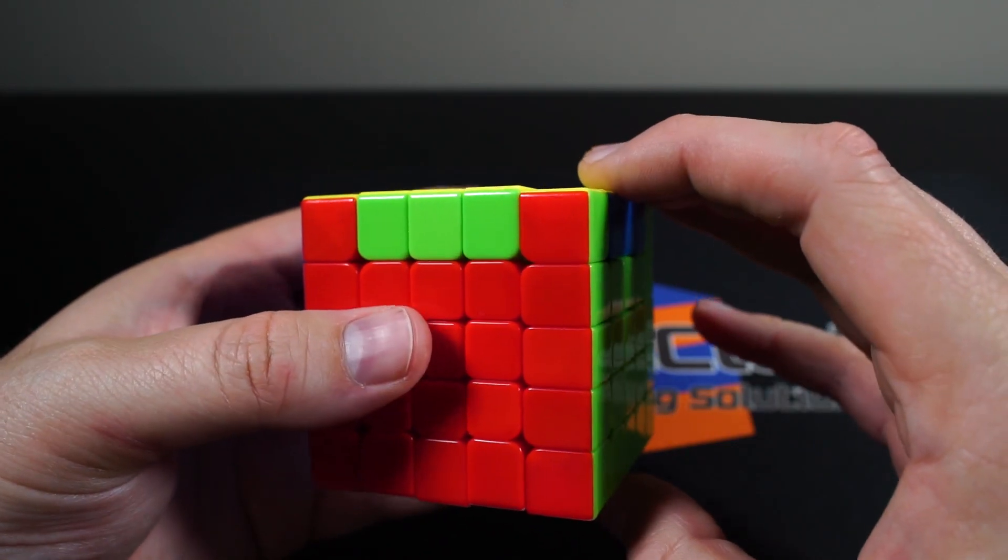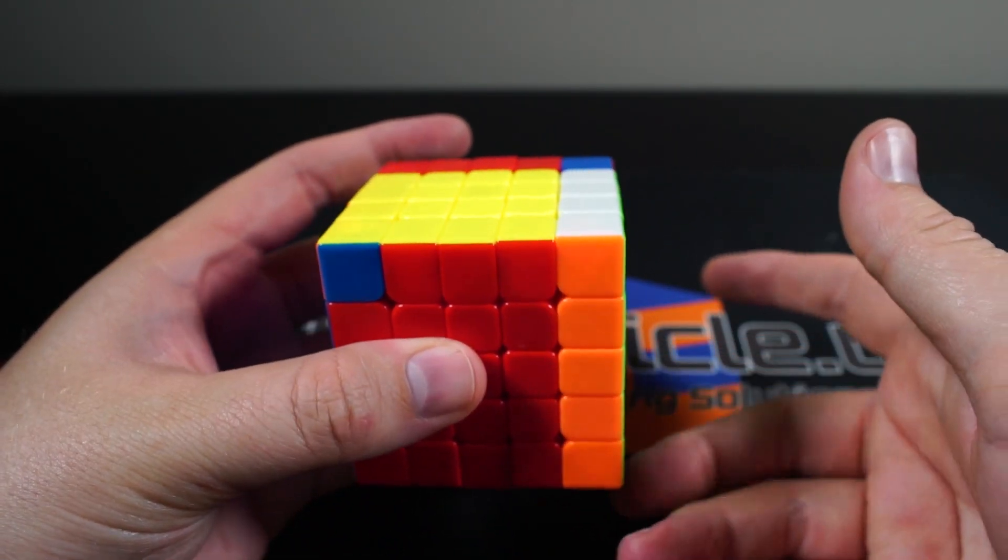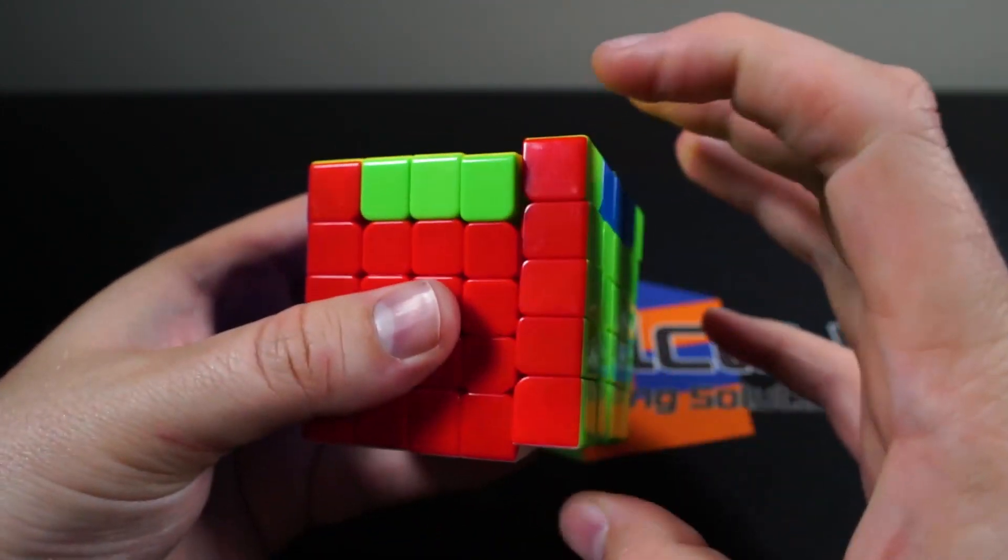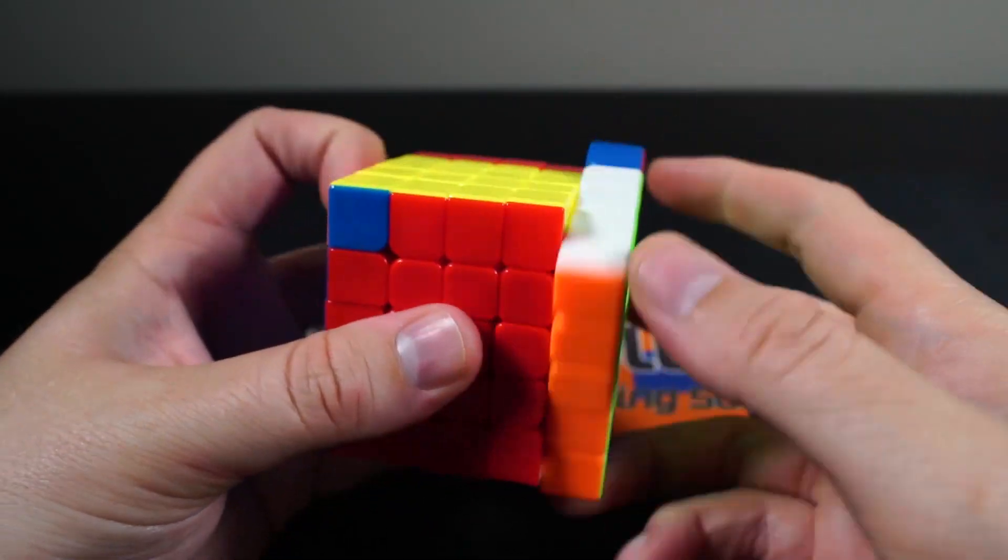Whenever I do this algorithm, the way I do it is R U' R—kind of a flick with my middle finger right there. When these layers just automatically align, it lets me do that move without actually having to think about it, like that.